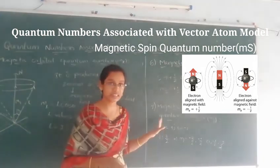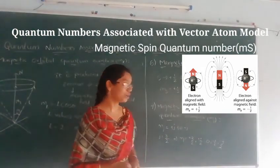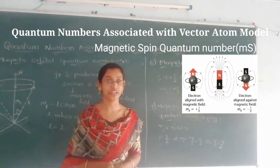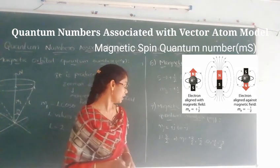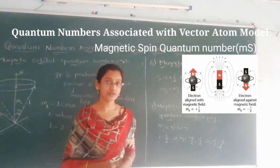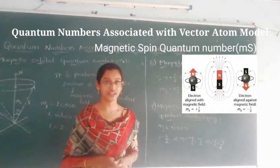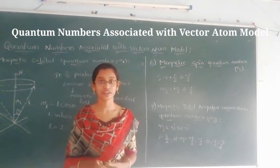The seventh and final quantum number is the magnetic total angular momentum quantum number, denoted mJ. The values of mJ range from +J to −J. Thank you.